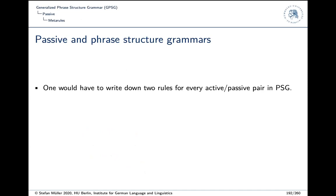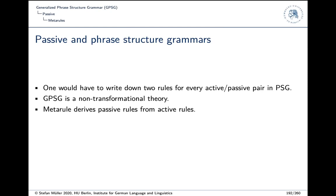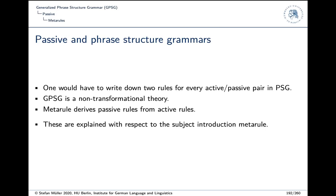So that's what we want to capture. With plain phrase structure grammar we'd be in the situation Chomsky rightly criticized — having to write down various rules for active and passive cases without capturing the generalization. GPSG is a non-transformational theory, so without transformations they had to invent another tool. What they did was invent meta-rules that derive passive rules from active rules.